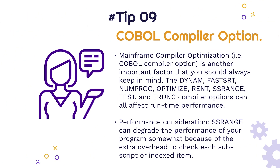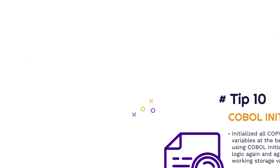Tip number nine: COBOL compiler options. Compiler options are another important factor to improve the performance of a COBOL application. There are many compiler options — such as DYNAM, NUMPROC, OPTIMIZE, RENT, SSRANGE, TEST, and TRUNC — that can affect runtime performance. For example, the SSRANGE compiler option can degrade performance because of the overhead involved in checking subscript or index items used to access elements from a table.